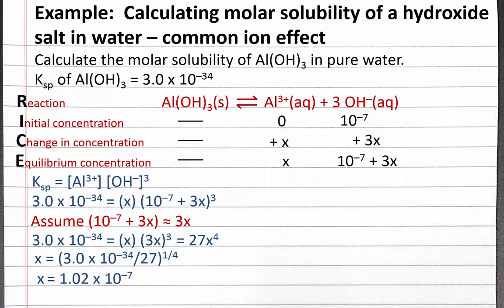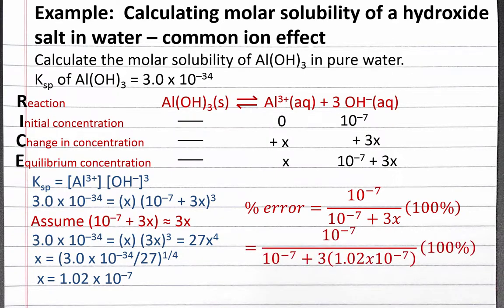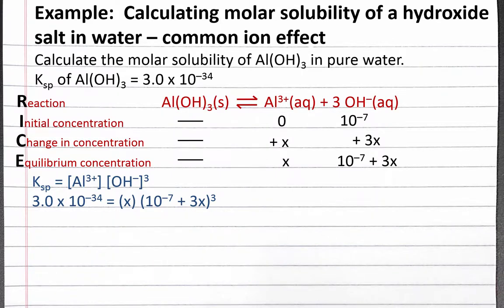To check if this assumption is valid, our percent error should be less than 5%. We divide the part we removed — 10 to the negative 7 — by the original expression, 10 to the negative 7 plus 3x, times 100%. Substituting in the value of x we calculated, we get 24.6 percent error. Our assumption was not valid; x is not small compared to 10 to the negative 7 molar. Let's go back and make our other assumption.